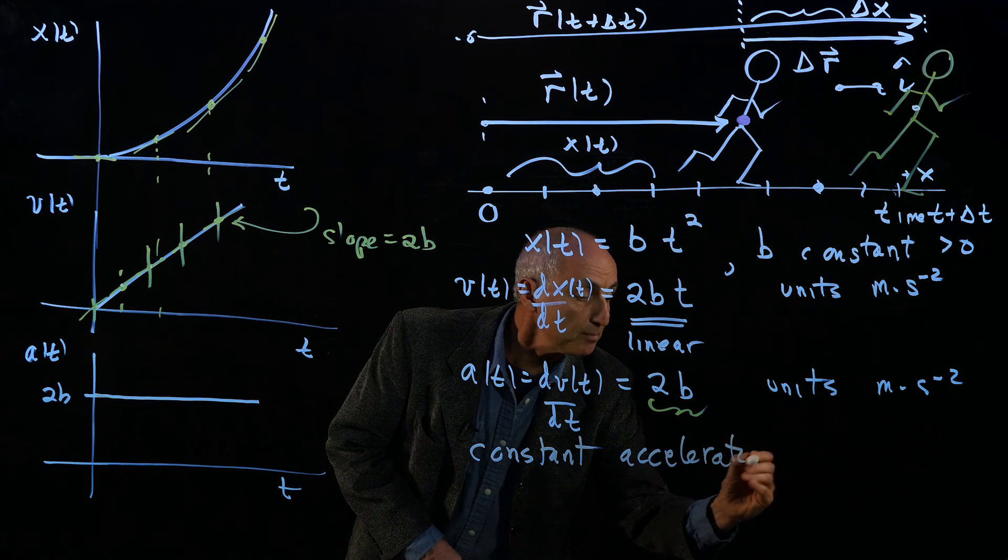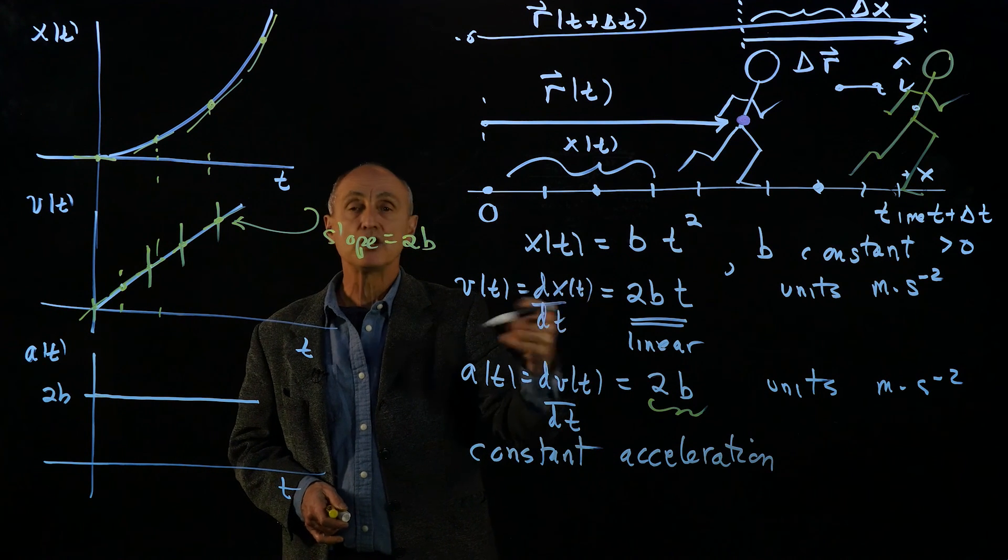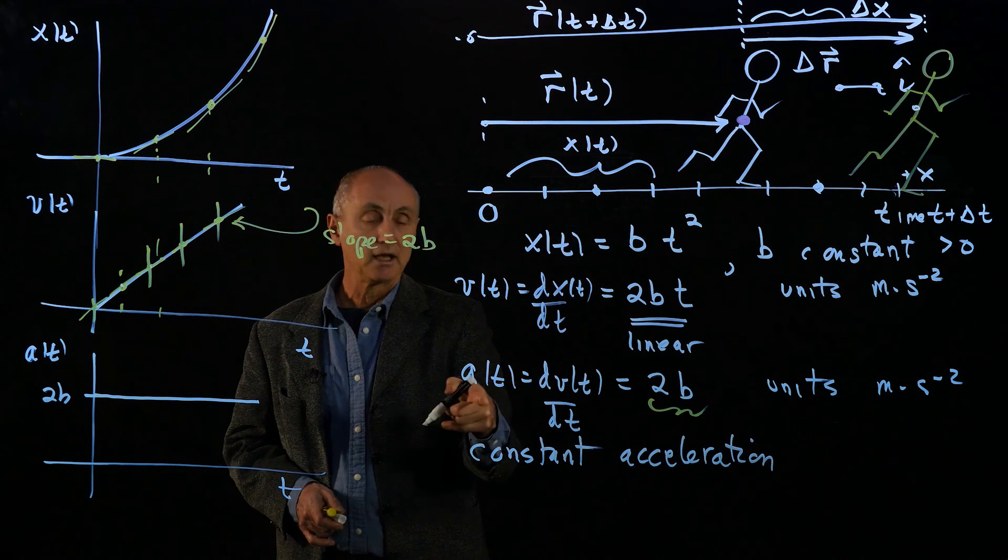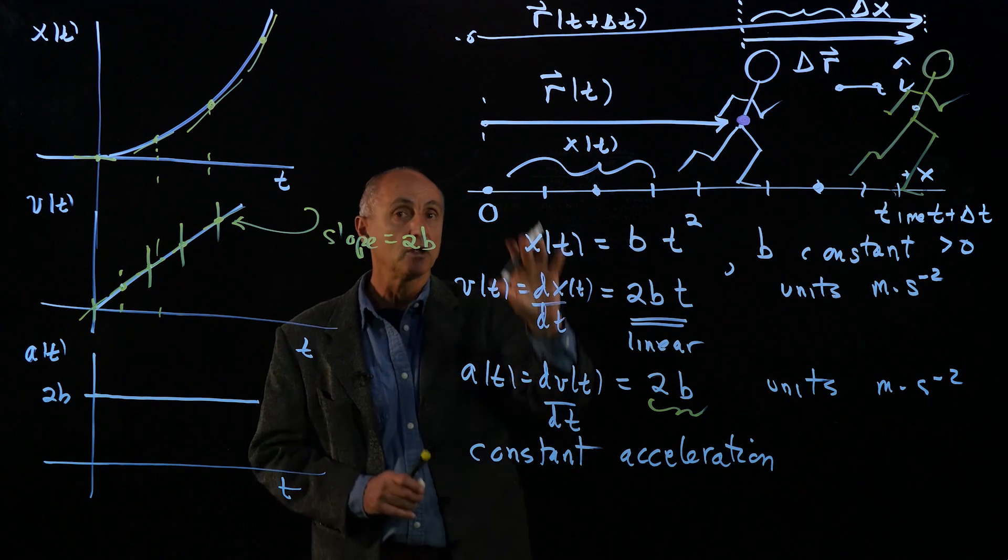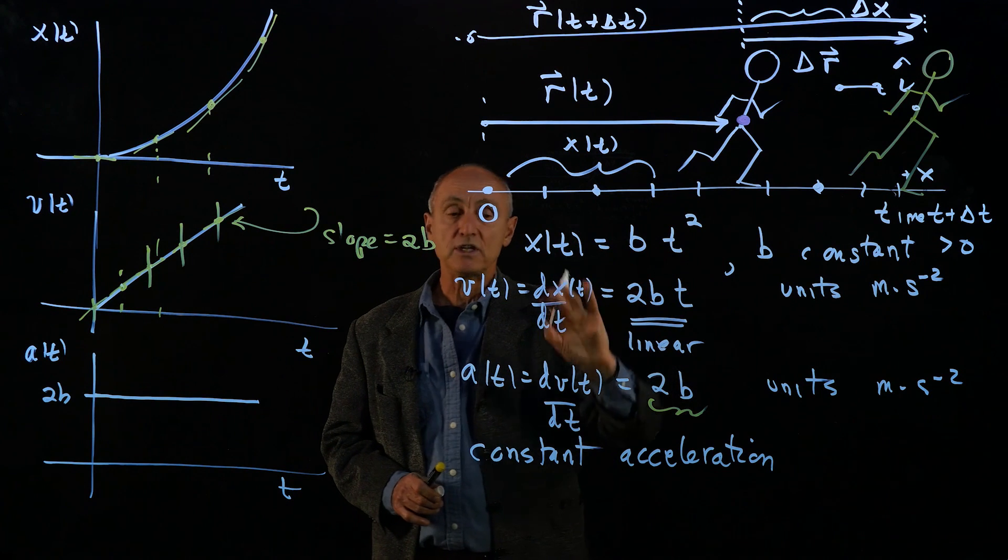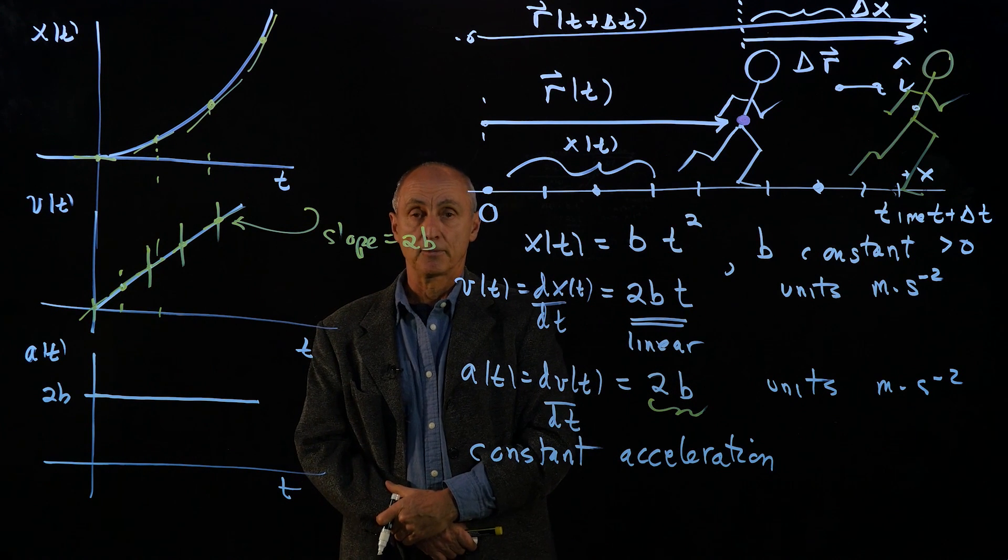And this is our simplest case. Notice we started with the position function. We differentiate to get the component of the velocity and to get the component of the acceleration. So this is a very simple model for a runner who's increasing speed linearly, accelerating at a constant rate.